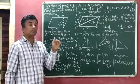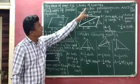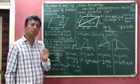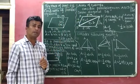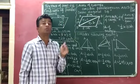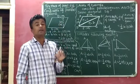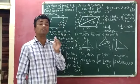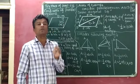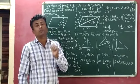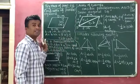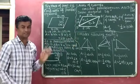So this is the explanation of Try This of page number 212 and area of triangle. The formula to find the area of a triangle is: area of triangle is equal to base multiplied by height, where B is the base and H is the height or altitude of the triangle. I hope you can understand this. Thank you.